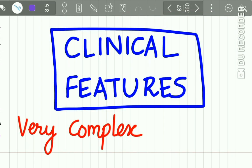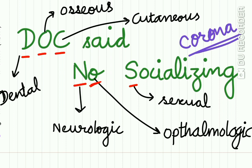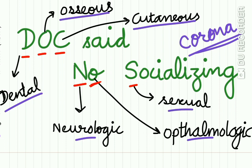Gorlin-Goltz syndrome presents very complex clinical features. An easy mnemonic to remember them is 'DOC SAID NO SOCIALIZING' — a coronavirus special mnemonic. D is for dental anomalies, O for osseous anomalies, C for cutaneous anomalies, N for neurologic anomalies, O for ophthalmologic anomalies, and S for sexual anomalies.